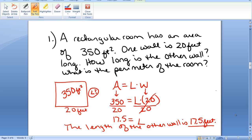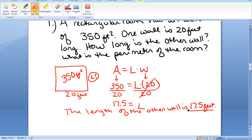Units are important. When you're writing your final answer, make sure you write a sentence that includes the units of your answer. It also asks us to find the perimeter of this room. So now we know that one wall is 20 feet, and this other wall is 17.5 feet.